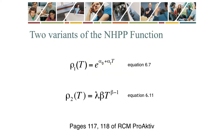Here are the two models. Model Rho1(T) has two parameters: alpha0 and alpha1. Model Rho2(T) also has two parameters: lambda and beta.